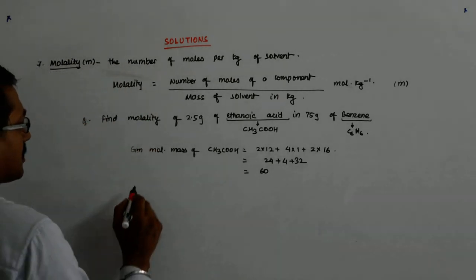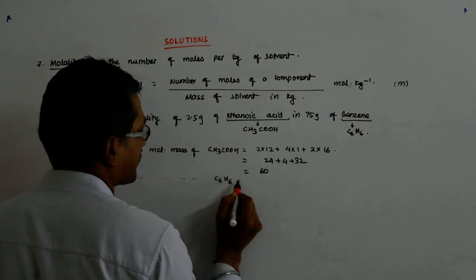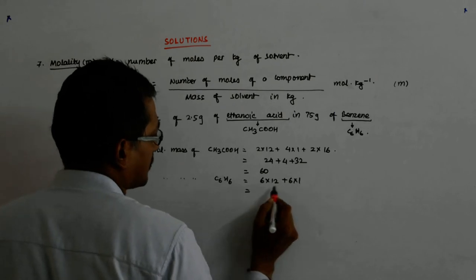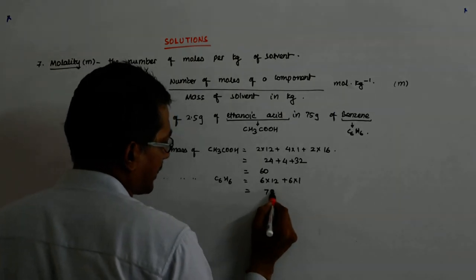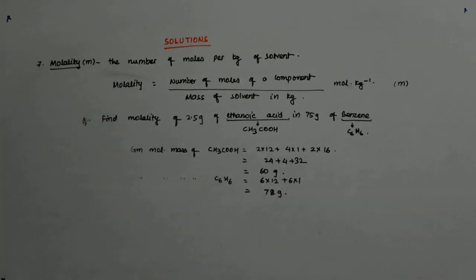And how about C6H6? 6 into 12, plus 6 into 1, so that is 78 grams.